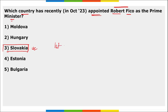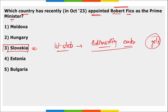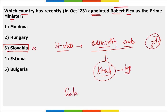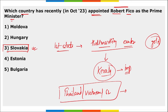Which state became the first in India where all districts will have hallmarking centers — centers where you can check the quality of gold? It is Kerala. Kerala is the first state where all districts have hallmarking centers. Also, recently Thailand provided free visa to Indians to boost tourism, and then Vietnam and Sri Lanka also provided free visas to Indians.